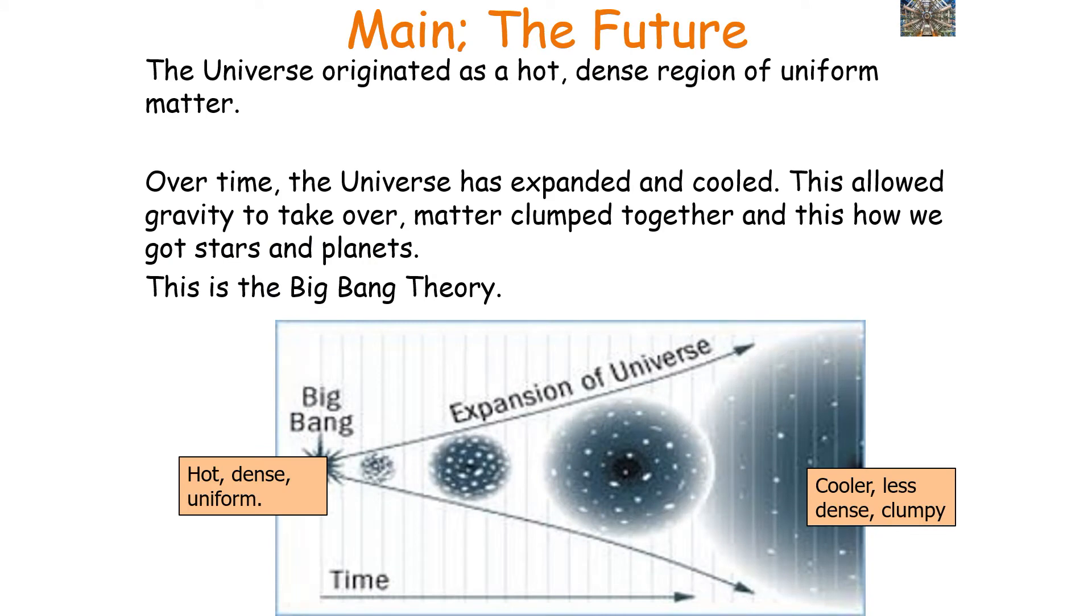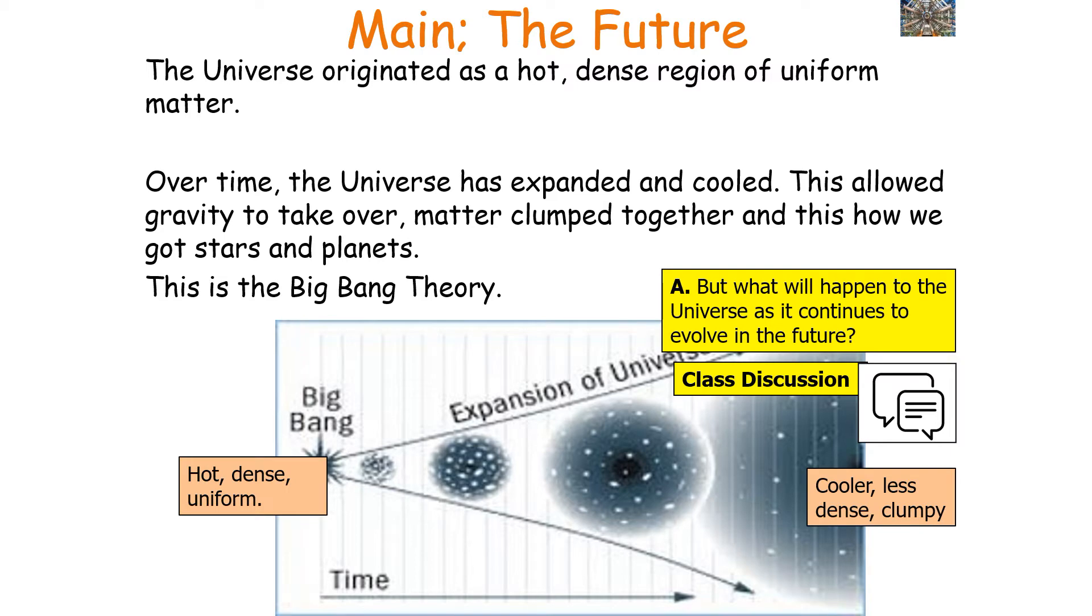Now we think from the hot Big Bang model that the universe originated as a hot, dense region of matter. Over time the universe has expanded and cooled, and this allowed gravity to take over. Matter clumped together and this is how we got stars and planets. But what will happen to the universe as it continues to evolve in the future?